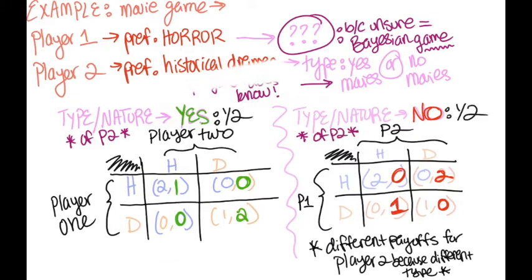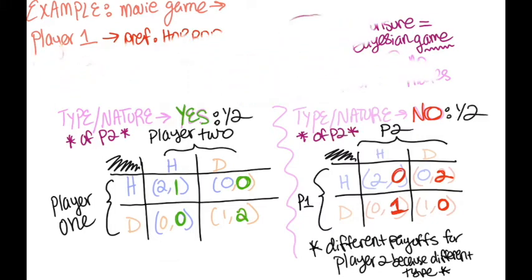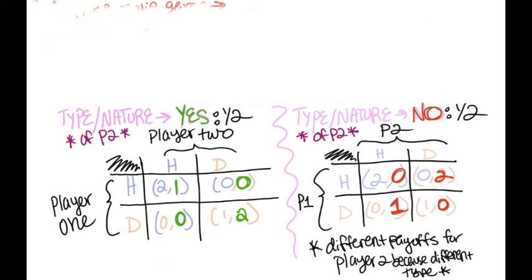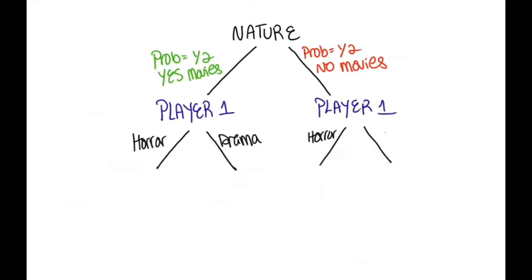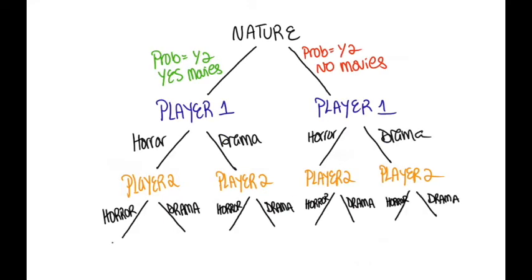Player 1 thinks that there is a 50-50 chance that player 2 will want to go to the movies, and so there is a 0.5 probability they are playing the game on the left and a 0.5 probability they are playing the game on the right. We can represent this game in the extensive form, or game tree format, as follows.